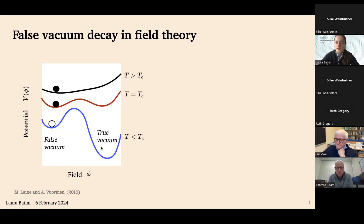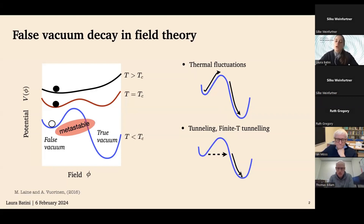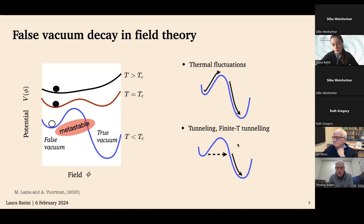In a classical world, the field would stay in the false vacuum forever and be stable. But in the presence of fluctuations it is not stable but metastable, and therefore, even if it is long-lived, it will eventually decay. This can be due to thermal fluctuations that lift it over the barrier, after which the field rolls down and reaches the true vacuum state. It is also possible that the system tunnels through the barrier — the case of tunneling, which can also be generalized to finite-temperature tunneling.